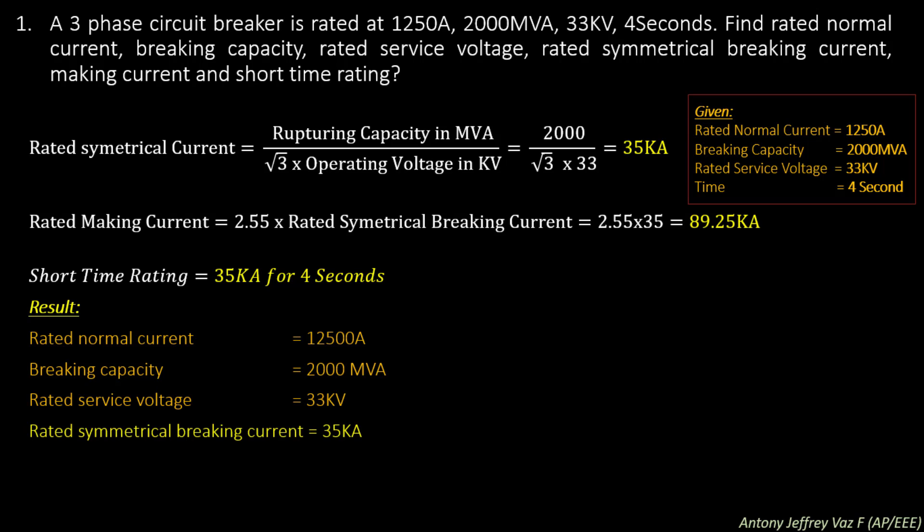These three parameters are given in the question itself. The last two parameters are found using formulas: rated symmetrical braking current is 35 kA, rated making current is 89.25 kA, and short time rating is 35 kA for 4 seconds — meaning the circuit breaker can break 35 kA for 4 seconds.